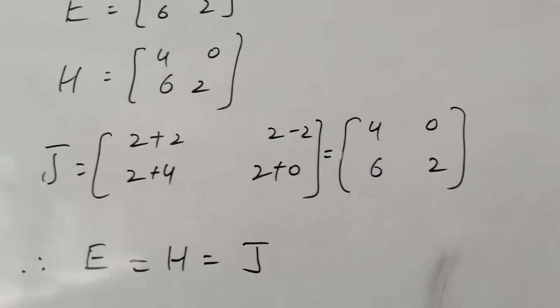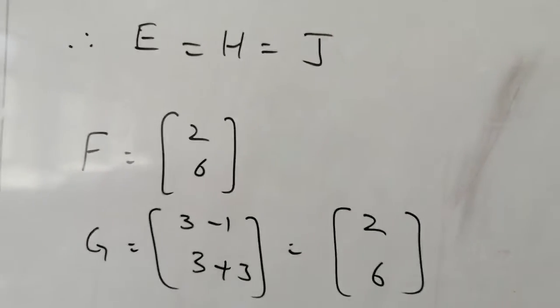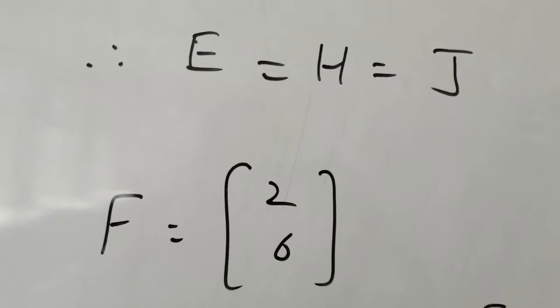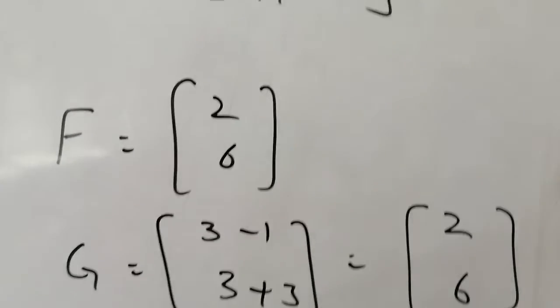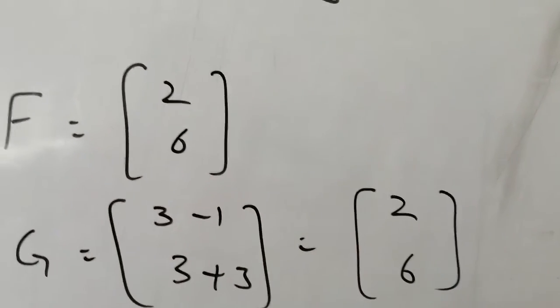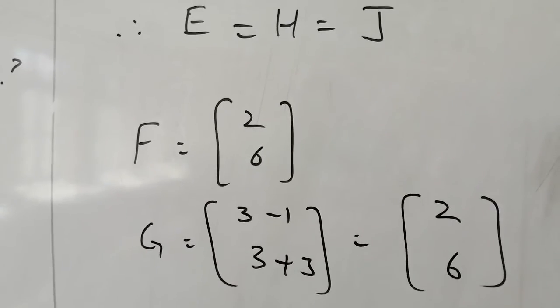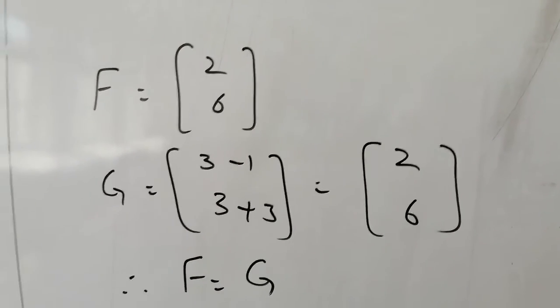Now we have one more matrix F which has entries 2 and 6. In G, if you have 3 minus 1, that's 2, and 3 plus 3, that's 6. This is 2 and 6. Now, see what we have. 2 rows and 1 column. So both orders are the same. Corresponding entries are the same. So F and G are equal.